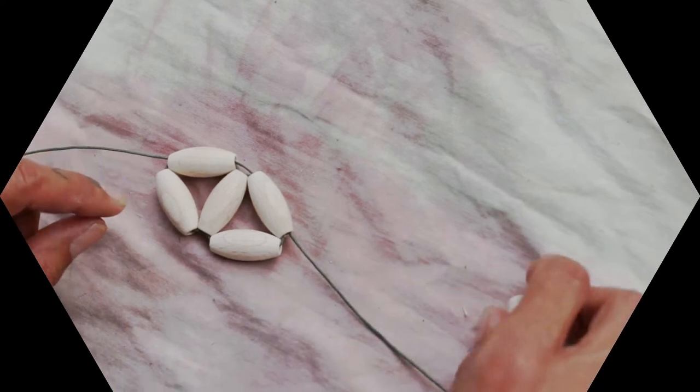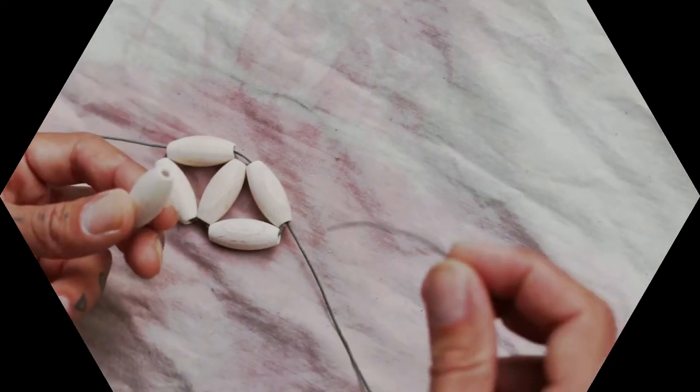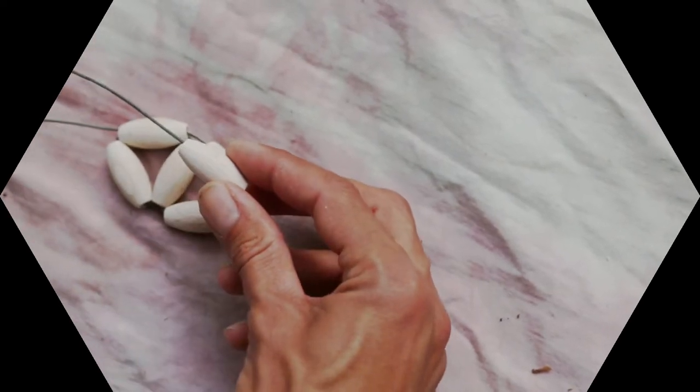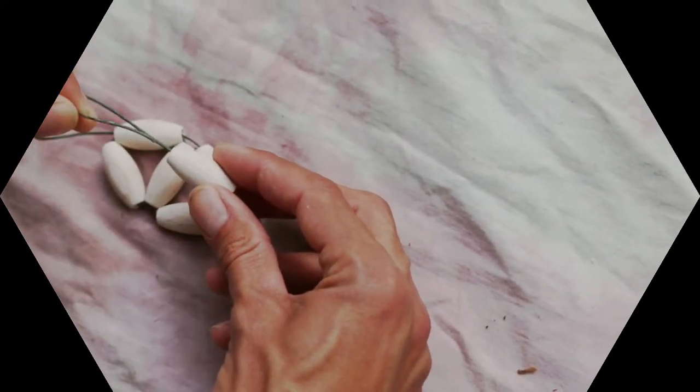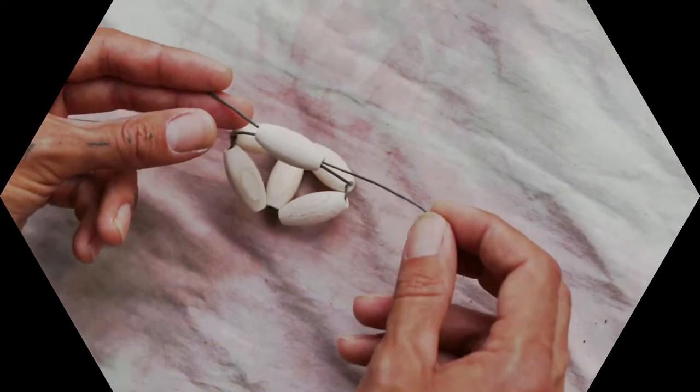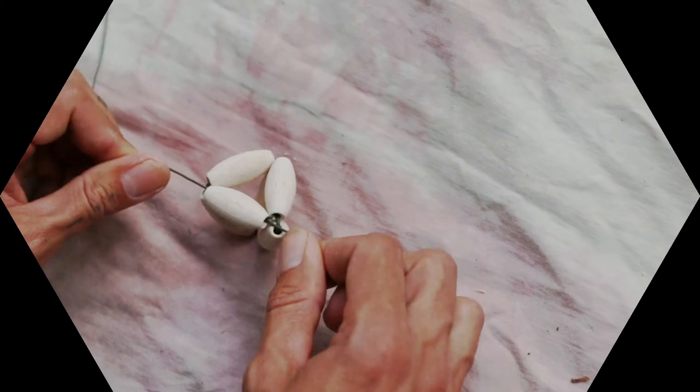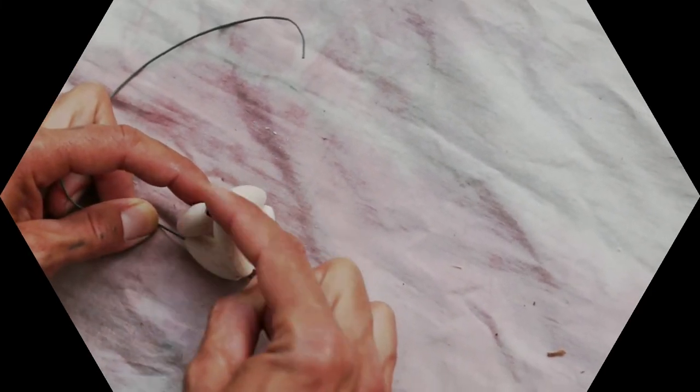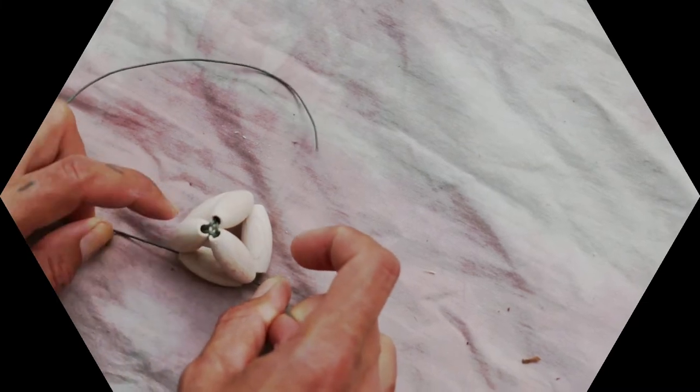And I just put that on both - I put both ends of the string through it. One goes one way, the other goes the other way. Then we pull that, and now we've got three - one, two, three - of the eyes already, all connected.